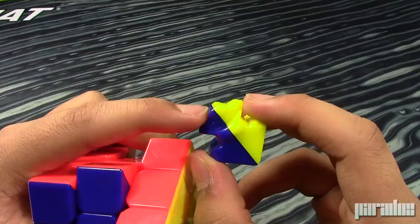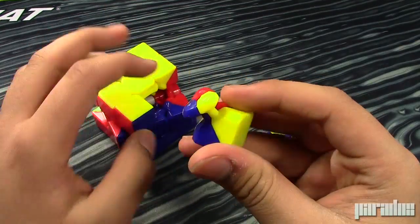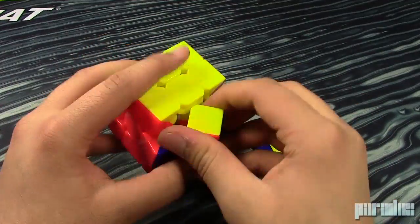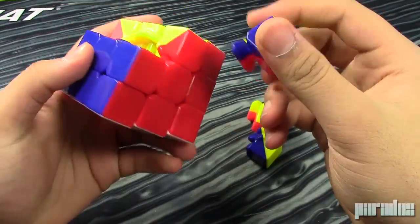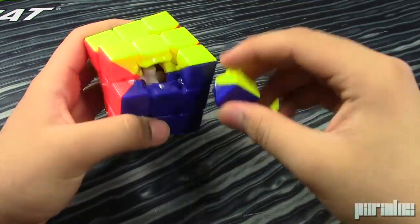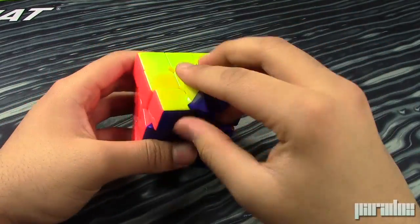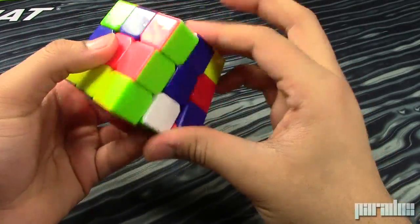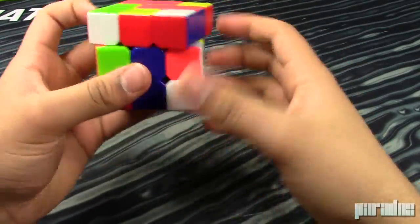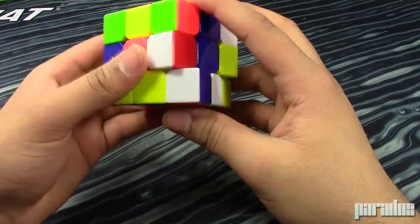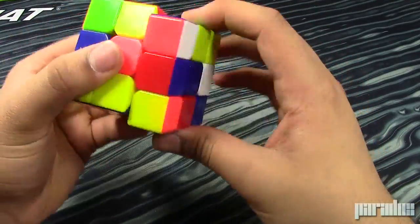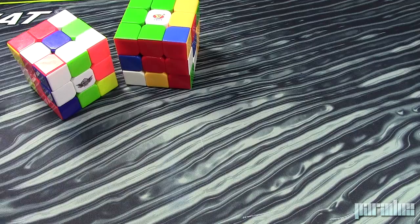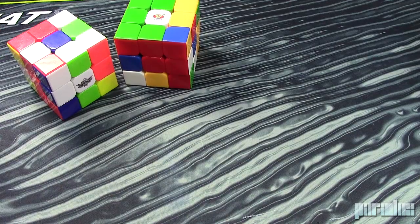And we can see it has a really similar mechanism to the YJ YuLong. Looks very interesting. So currently this is only available in stickerless, which makes this not competition legal. But I've heard that they are coming out with competition legal versions of this. And I've heard that they're going to be good cubes. So yeah, this is a really good cube. It just tends to lock up because it can't corner cut as much as other cubes, but it's very fast and it has a good feel.